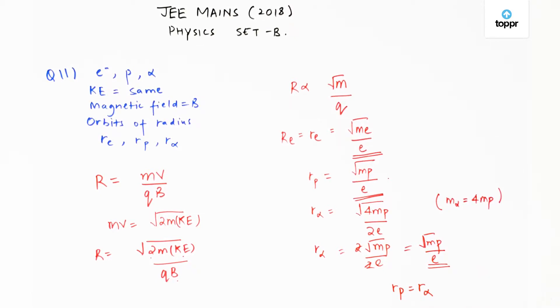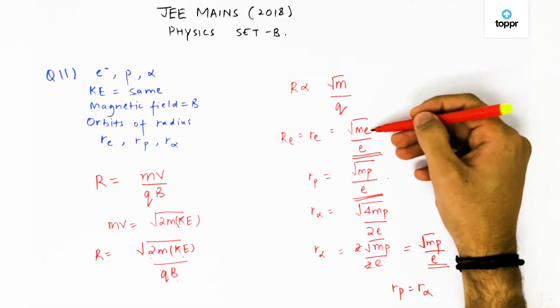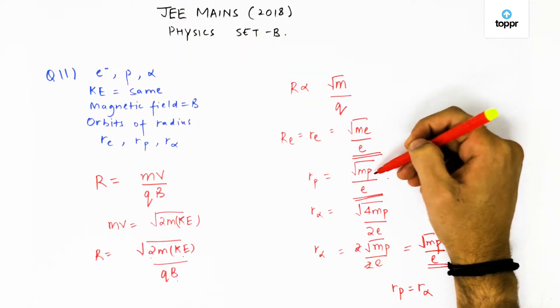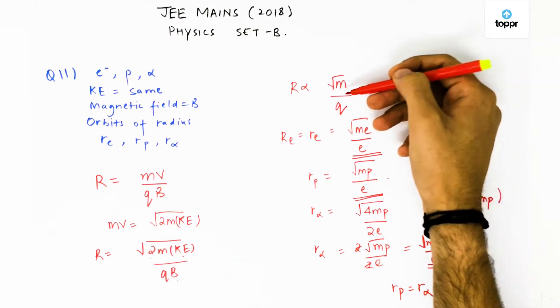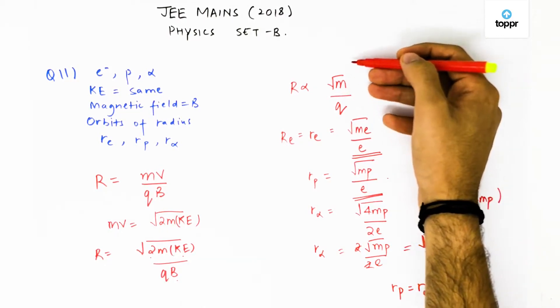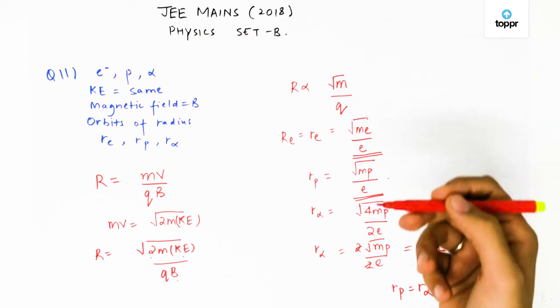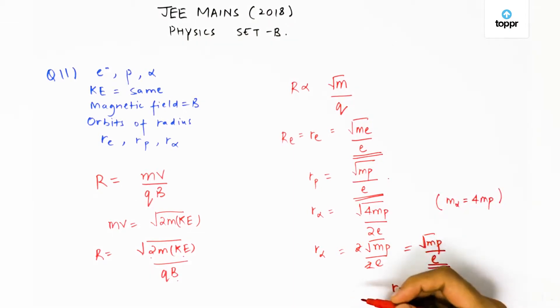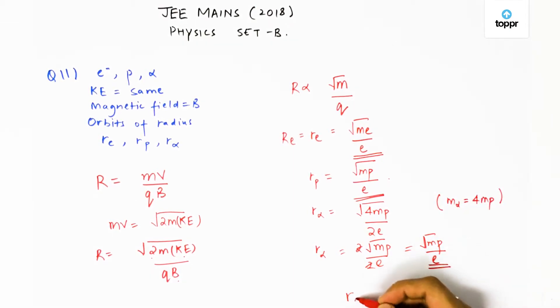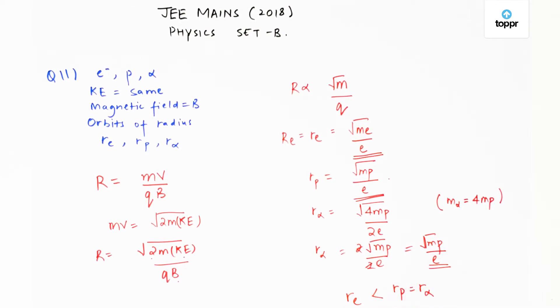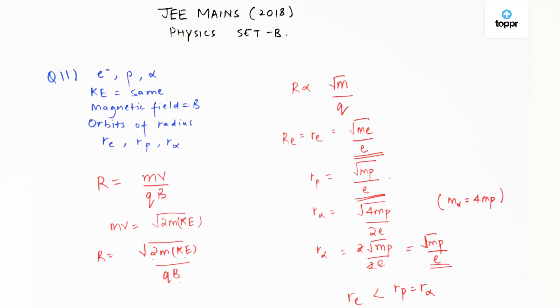Now, for the radius of electron and the radius of proton, because mass of the electron is very less than mass of the proton, if mass of the proton is higher, its radius would be higher. We can simply say that the radius of the electron would be lesser than the radius of proton because of their masses. And this is our final answer which corresponds to the option number 4.